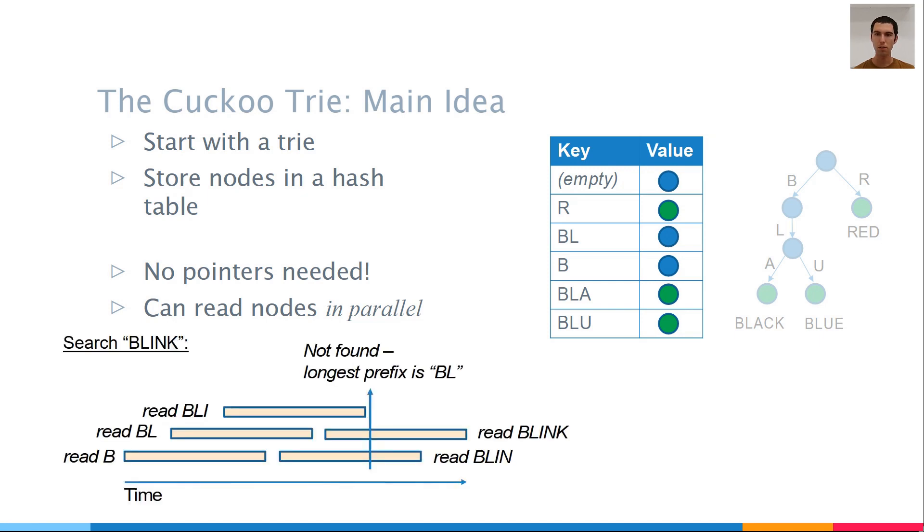Let's see an example. Say that we search for the key blink in this trie. We know that the nodes we need are B, BL, BLI, and so on. First, it reads the node B. Then, while this request is still in progress, the CPU starts to search for the node BL, and so on. Once the read request for BLI returns, we see that this node does not exist in the hash table, so the key is not in the trie. The requests for blim and blink are still in progress, but we don't have to wait for their results. This way, we have multiple memory accesses running at every moment, and the effective memory latency for each access is much smaller.